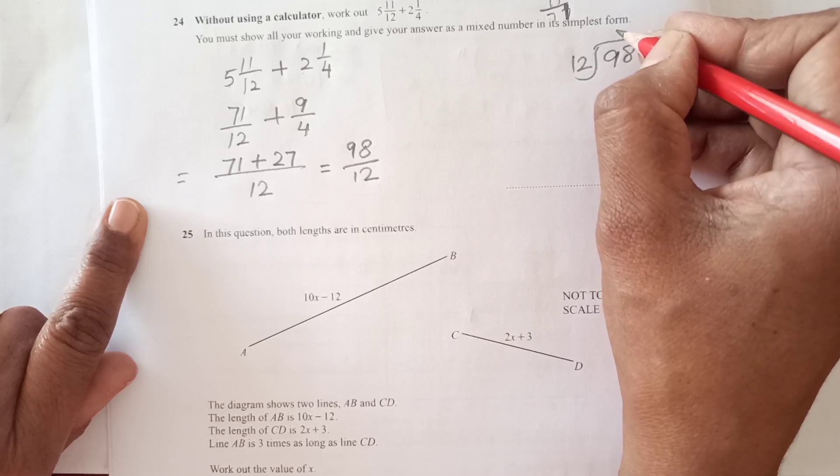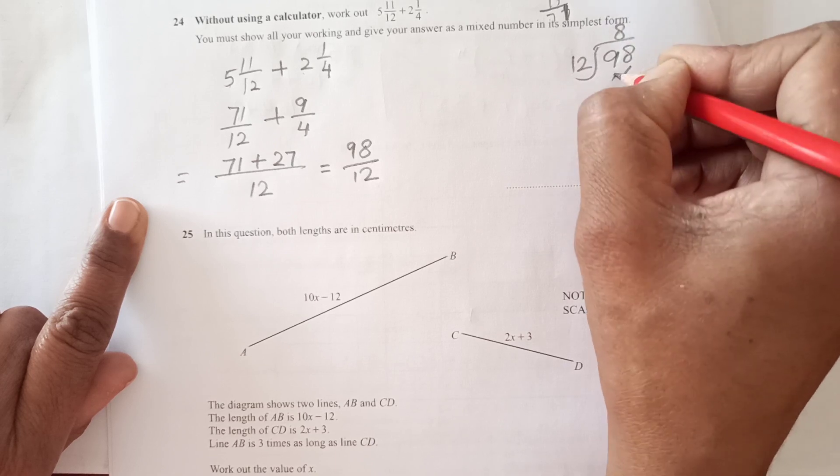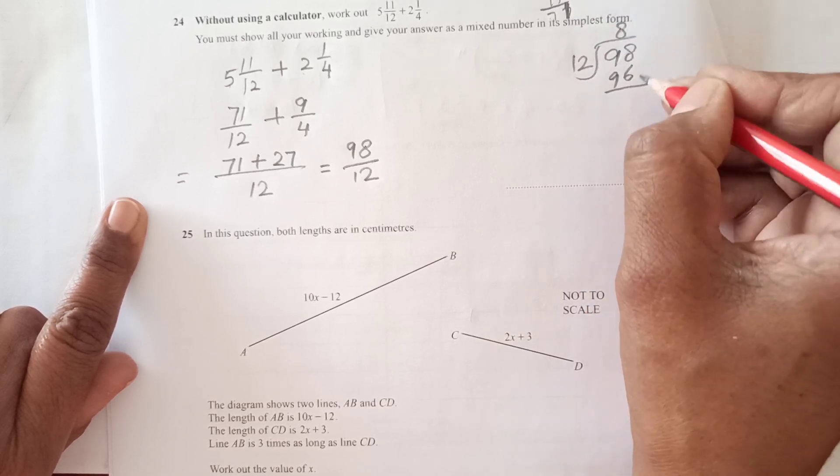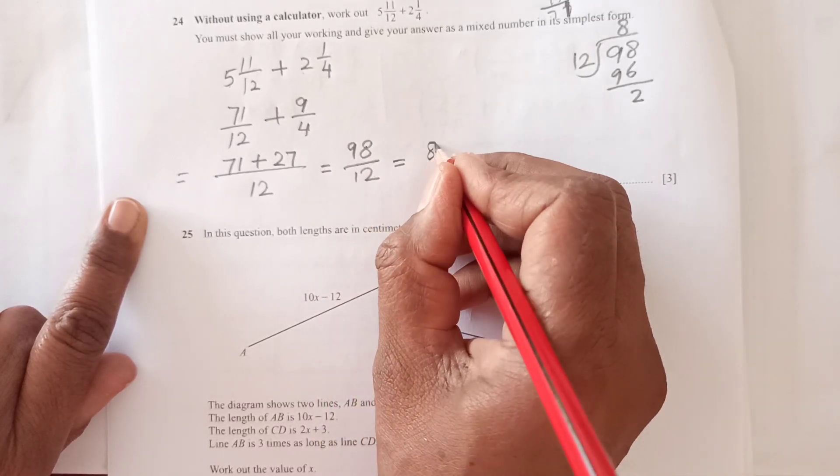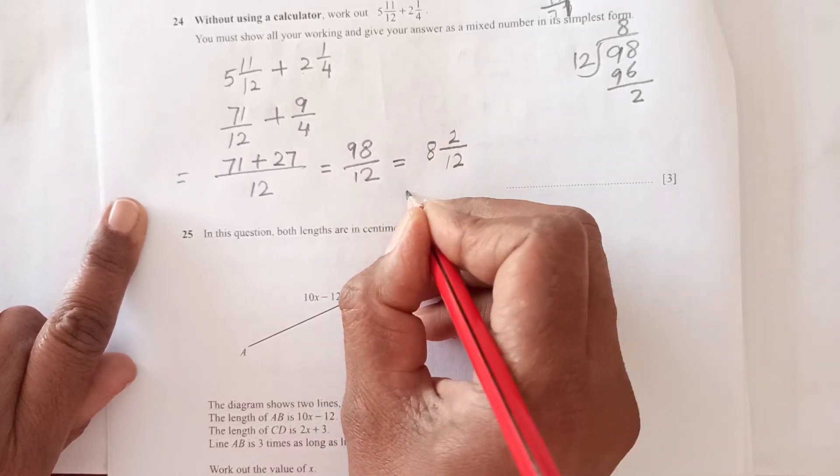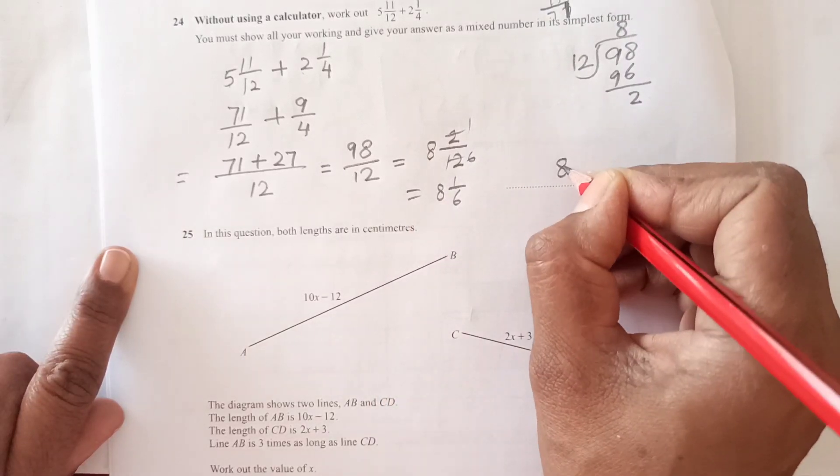98 over 12. Dividing: 12 times 8 is 96, leaving 2. So this is 8 and 2/12, which simplifies to 8 and 1/6.